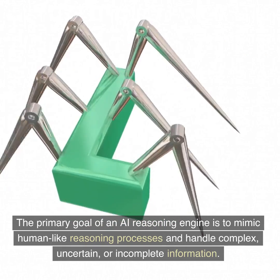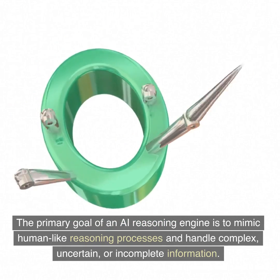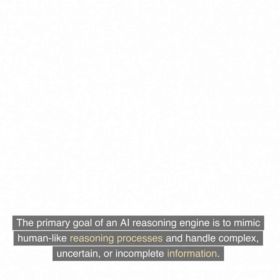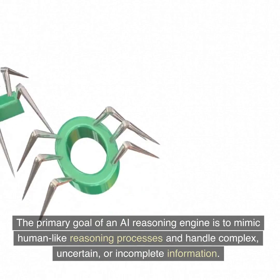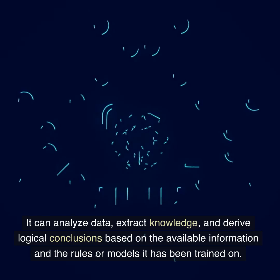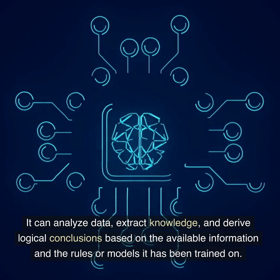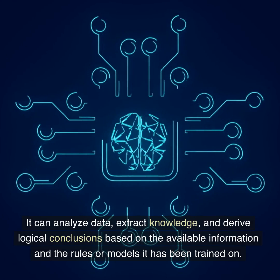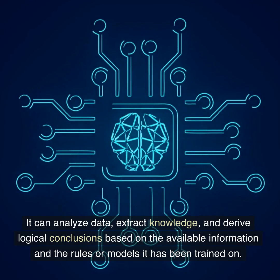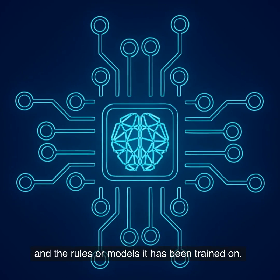The primary goal of an AI reasoning engine is to mimic human-like reasoning processes and handle complex, uncertain, or incomplete information. It can analyze data, extract knowledge, and derive logical conclusions based on the available information and the rules or models it has been trained on.